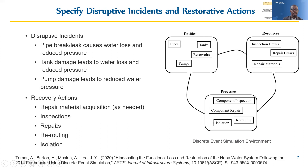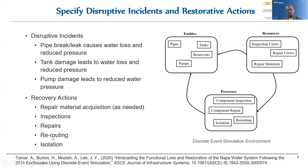We also need to specify the actions needed to bring about recovery — acquiring any repair materials as needed, or using materials already stockpiled. Then there are typical activities like inspections and repairs that are system-agnostic. Specific to water distribution systems, there are other things that are often done to minimize water loss and try to provide service to as many people as possible.